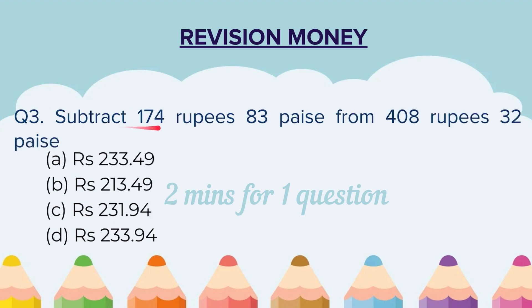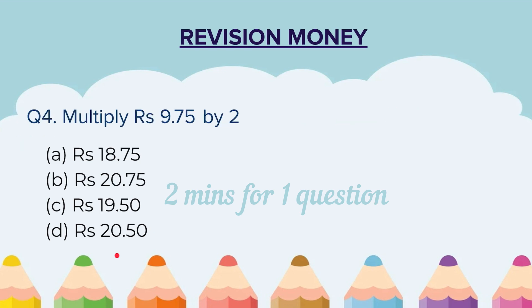Question 3: Subtract 174 rupees 83 paise from 408 rupees 32 paise. Again, you will subtract and then find the correct answer out of the given 4 options. Question 4: Multiply rupees 9.75 by 2. Multiply and then choose your correct answer out of the 4 options given.